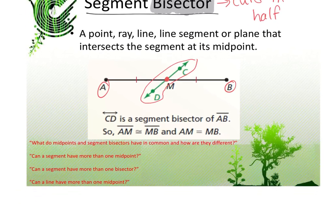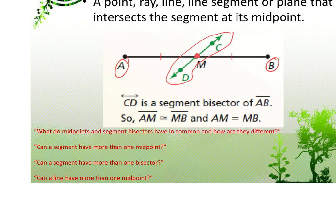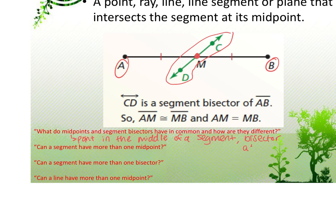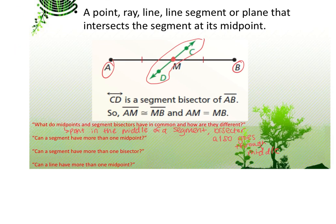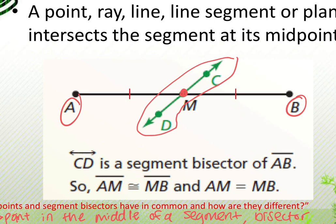What do midpoints and segment bisectors have in common, and how are they different? A midpoint is the point in the middle of a segment, and a bisector also goes through the middle. But a bisector does not have to be a midpoint. For example, the segment bisector of AB could be line CD, but the midpoint is just the point M. A bisector can be any sort of ray, line, segment, or point, but a midpoint has to be a point.